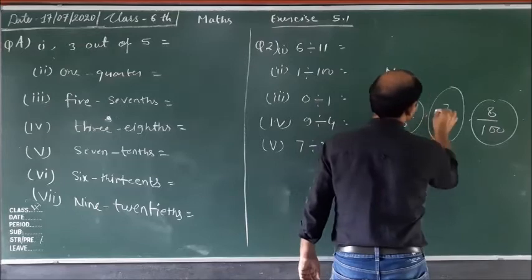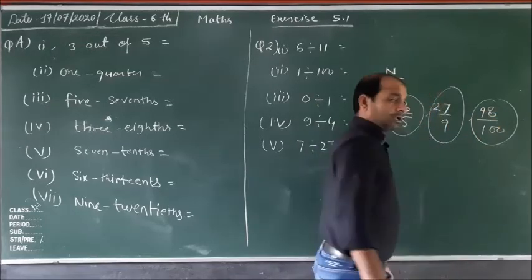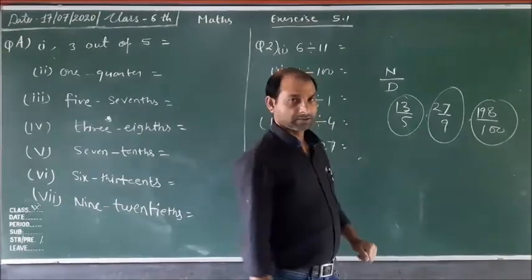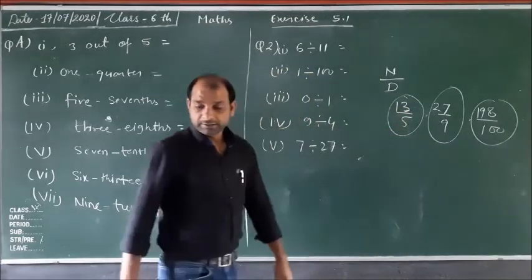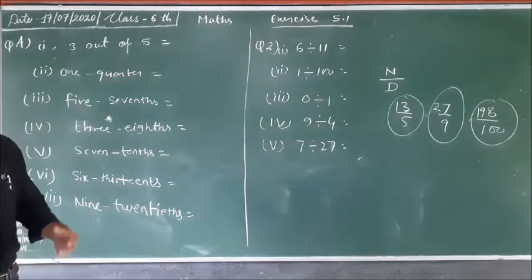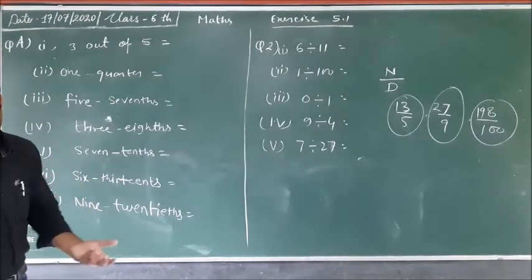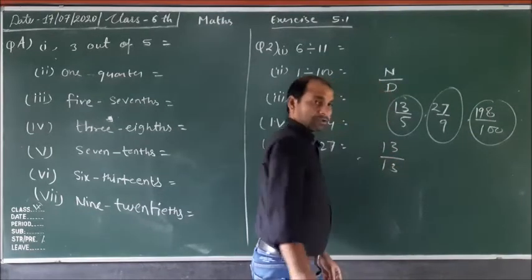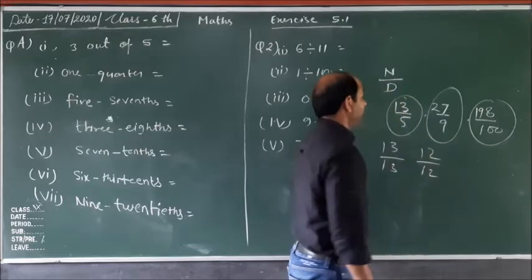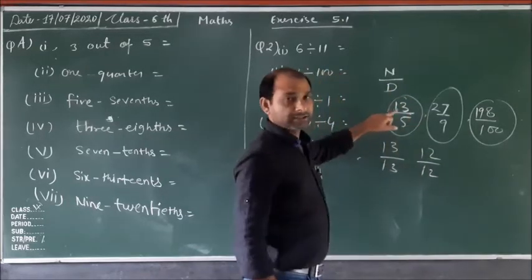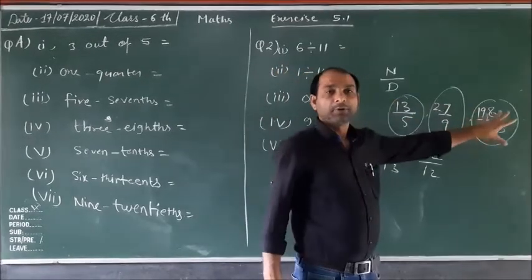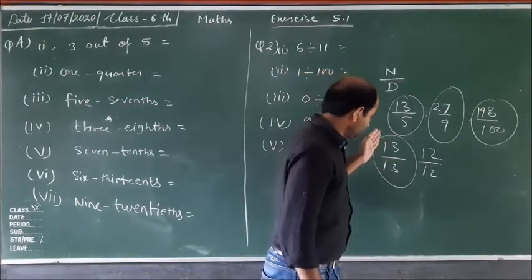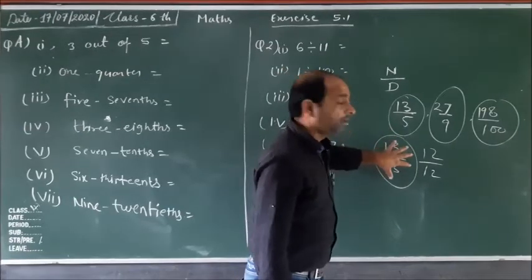Now, if we look at fractions like 13 upon something, 27 upon 9, and 8 upon something — here the numerator is greater than the denominator. Fractions in which the numerator is either equal to or greater than the denominator are called improper fractions. For example: 13 upon 13, 12 upon 12. If the numerator is greater than the denominator, or if numerator and denominator are equal, that is also an improper fraction.